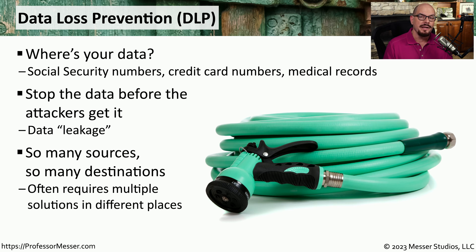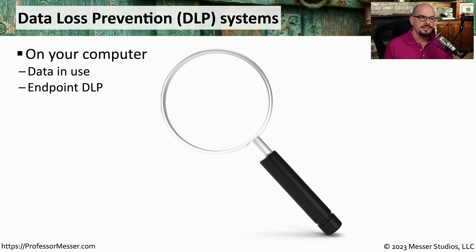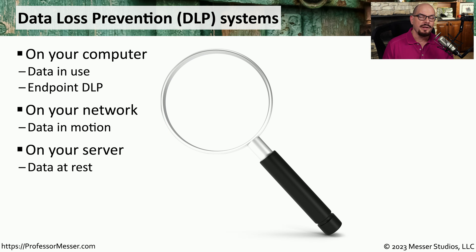There are also DLP solutions that run as software on the operating system itself. We'll often refer to these on-computer DLP solutions as something that will monitor data in use, which means the data is in the active memory of that system, or we'll refer to it as an endpoint DLP, the endpoint being that individual system. If the DLP solution is connected to the network and it's monitoring packets in real-time, we refer to this as data in motion. This DLP functionality may be integrated into a next-generation firewall, or it might be a standalone DLP appliance. And if you need to monitor files stored in the file system of an operating system, then you need to monitor data at rest — a DLP solution that usually runs as software directly on that server or operating system itself.